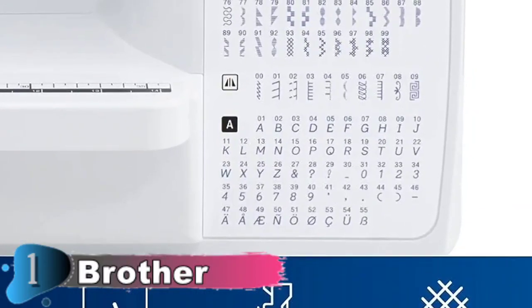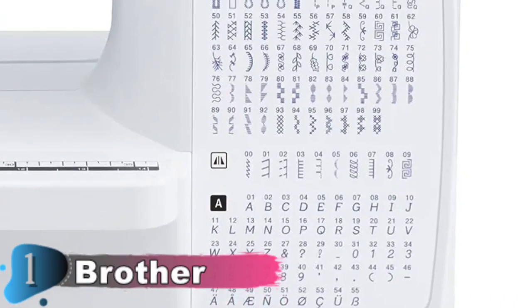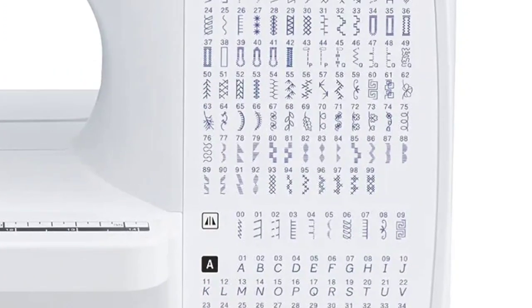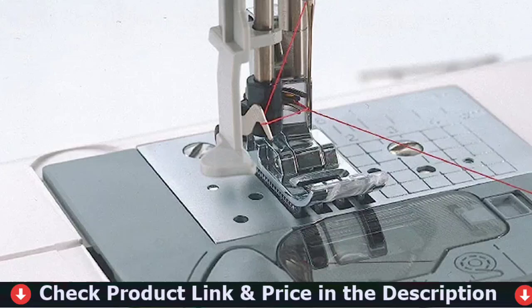This machine comes with 110 unique utility, decorative, and heirloom stitches, including 8 styles of one-step, autosized buttonholes. These features allow you to easily construct everything from garments to quilting masterpieces.